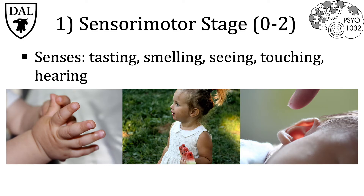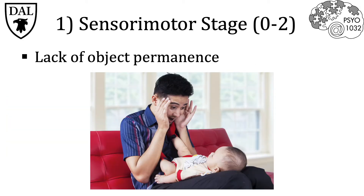In the sensorimotor stage, Piaget claimed that the knowledge a child or infant gains is primarily through the senses — that is through tasting, smelling, seeing, touching, and hearing. One phenomenon Piaget believed to be indicative of the early stages of the sensorimotor stage was a lack of object permanence, which is an absence of the ability to recognize that objects still exist even when they're not being sensed.